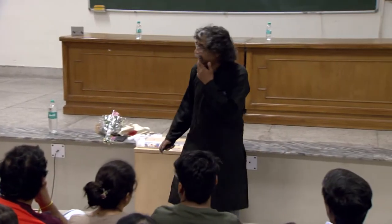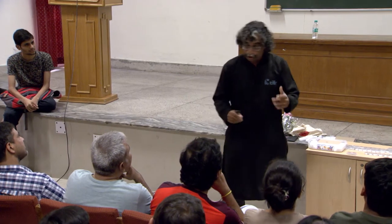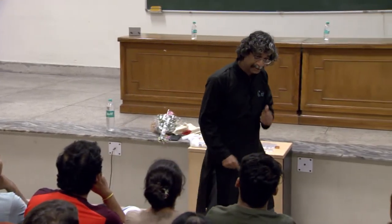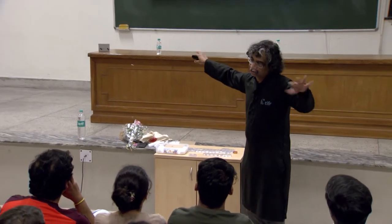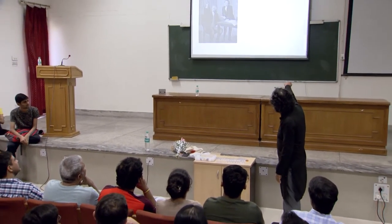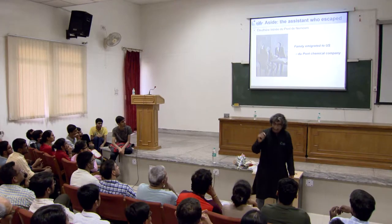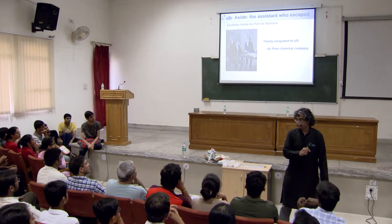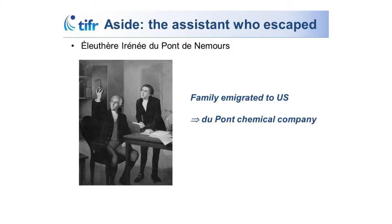In Lavoisier's lab there was an assistant who managed to escape. In Europe at that time, if you were escaping the revolution, the best place to go was America. This is the beginning of the DuPont family and the DuPont chemical company — it comes out of Lavoisier's lab. Today a big global player, but its origins are right there.